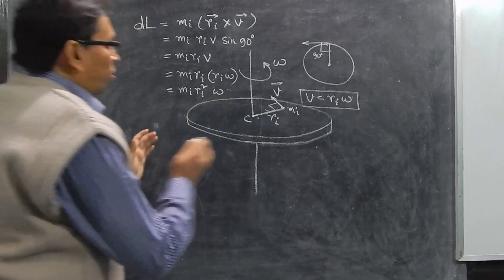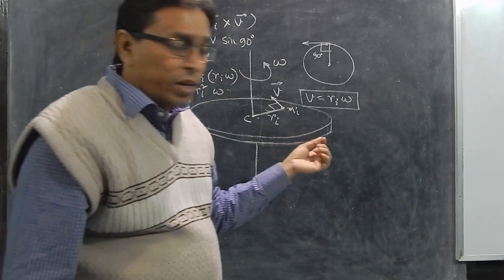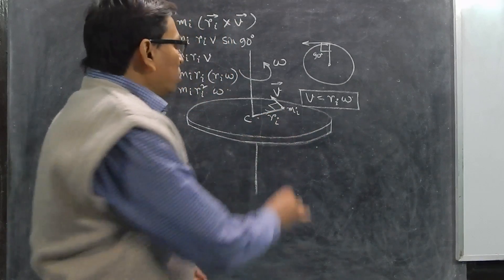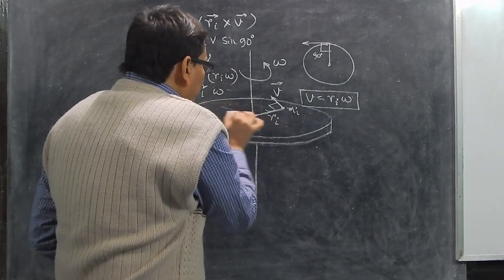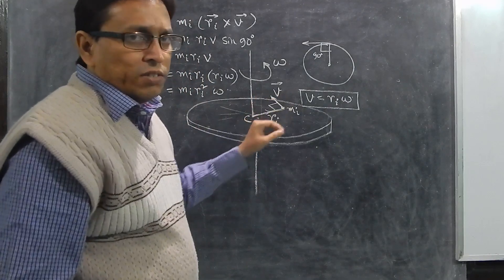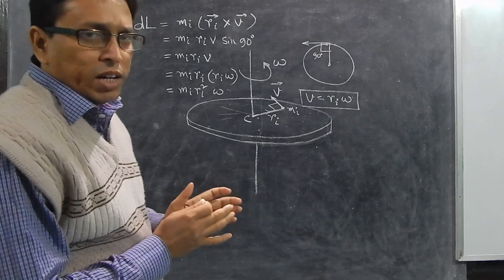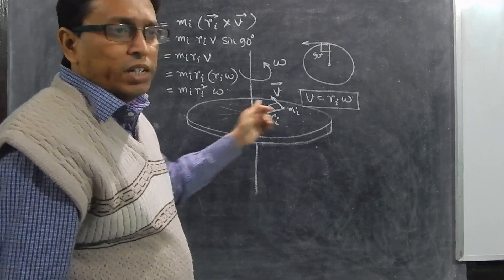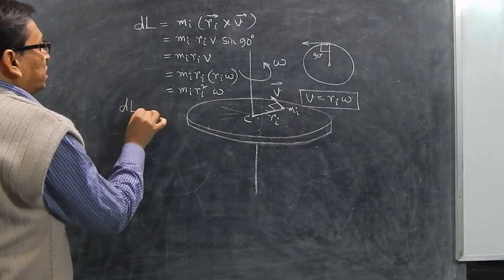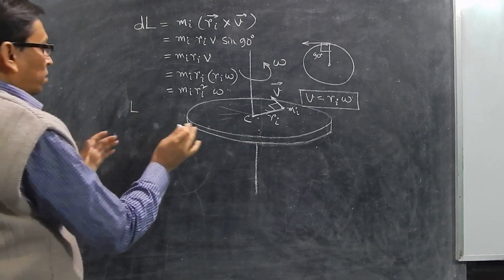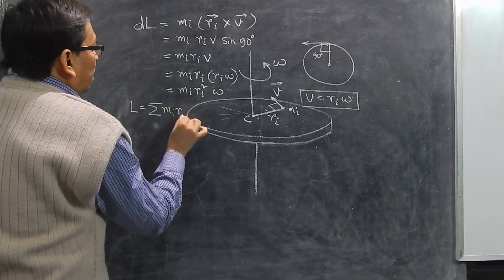To get the total angular momentum of the disk, we take the summation over all particles. There are many points located at different radii from the origin, so we have to take the summation of all masses mi and the square of their respective radii ri. So the total angular momentum L = Σmi × ri² × ω.